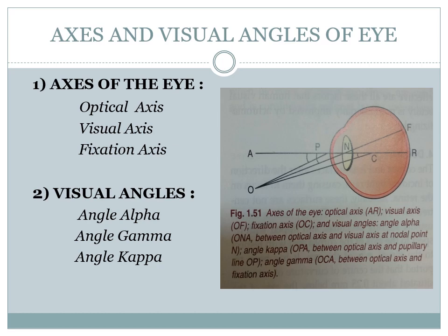The eye has three important axes and associated angles. The optical axis is denoted AR. The visual axis is OF, and the fixation axis is OC. Angle alpha is the angle between the optical axis and the visual axis. Angle kappa is the angle between the optical axis and the pupillary line, denoted OPA. Angle gamma is the angle between the optical axis and the fixation axis, denoted OCA.